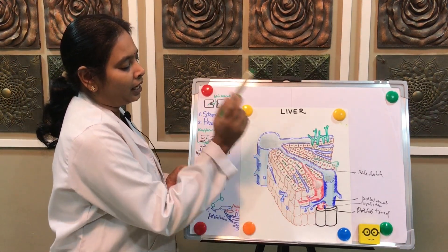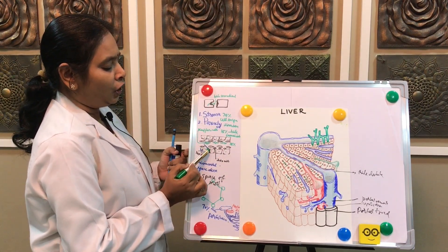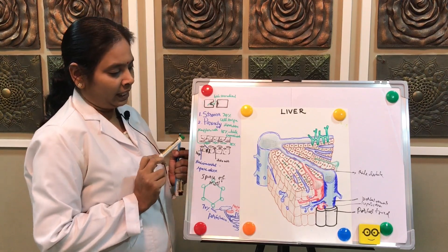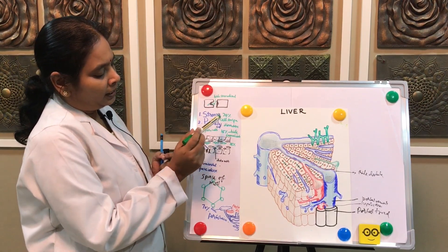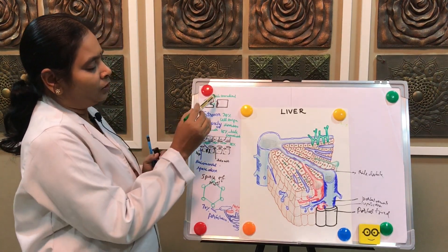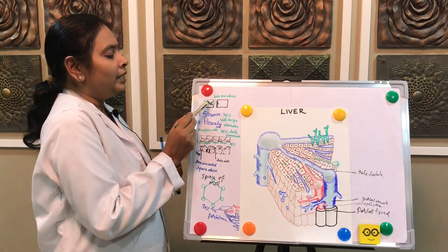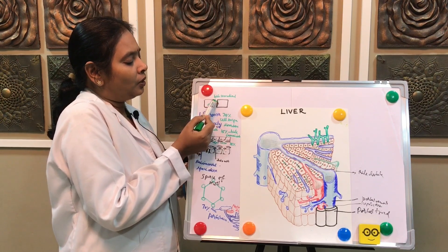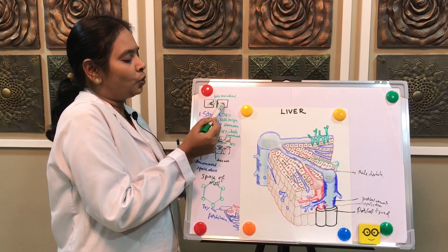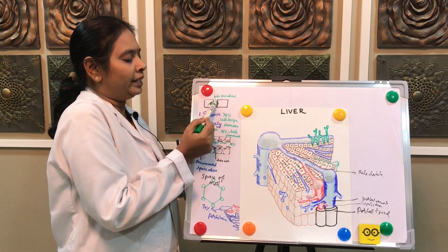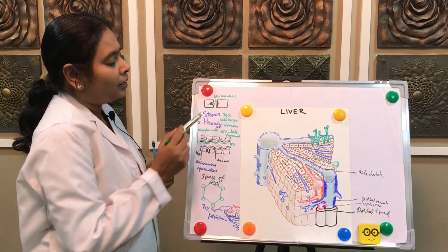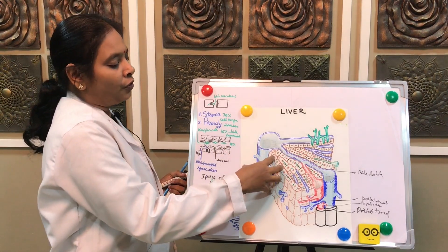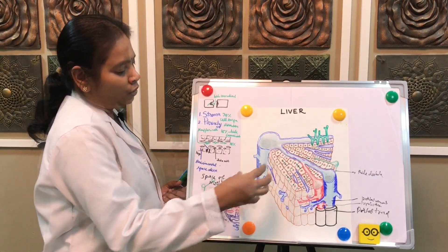The bile canaliculi lie between any two hepatocytes. The bile canaliculi is essentially an intercellular space — a depression on the cellular surface — formed in the gap between adjacent cells. This is the arrangement of the hepatic lobule.